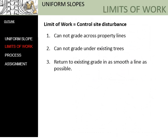The second concept in this lecture is something called the limit of work — another way we control how much of the site we disturb. There are a couple of rules to follow. First, we cannot grade across property lines; we do not own adjacent land and must stay well away from property lines. Second, we cannot grade under existing trees in order to preserve their health. Third, we want to return to existing grade in as smooth a line as possible — we do not want our design to look like it abruptly ends, but to blend into the existing landforms.